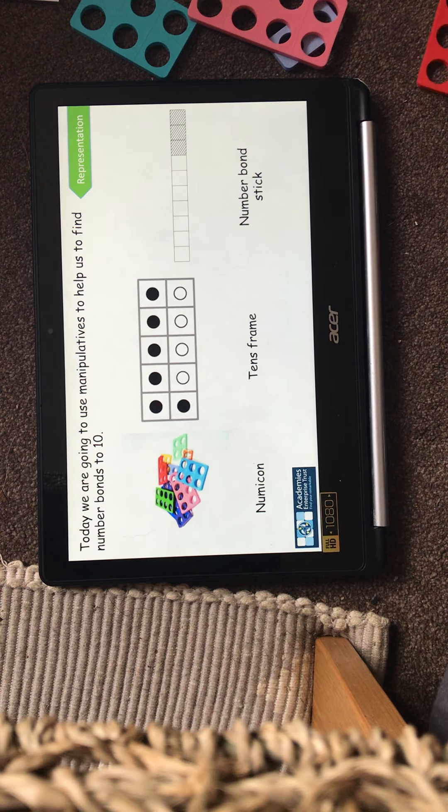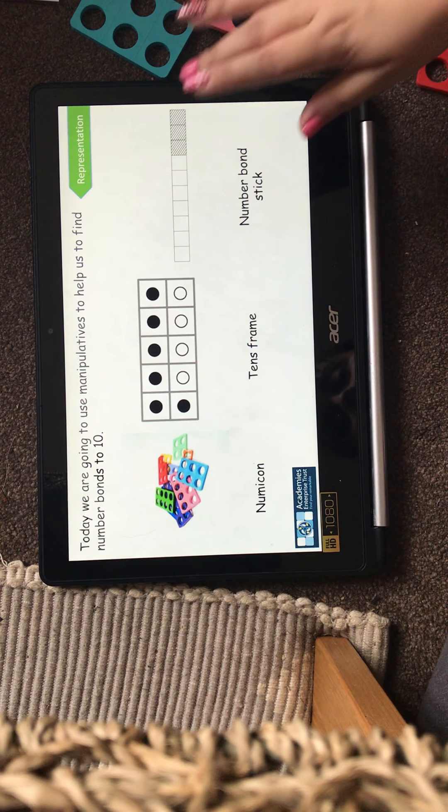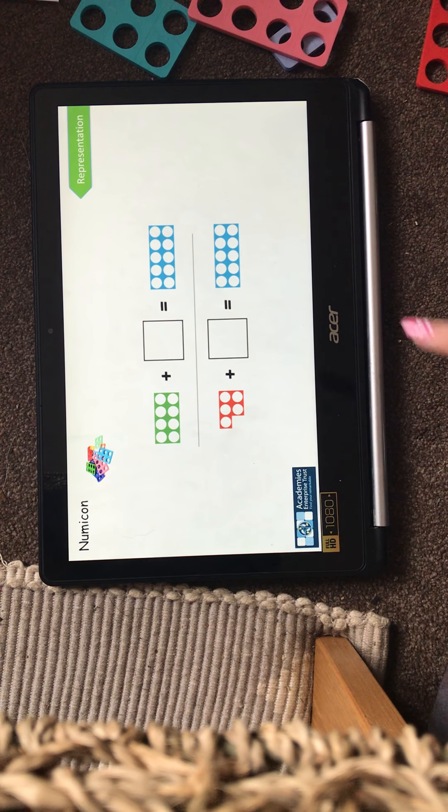So again, we're going to use our Numicon, our 10s frames, and our number bonds stick, or we can use a number line or a counting stick. Now remember, to use our Numicon, we're going to count how many circles.